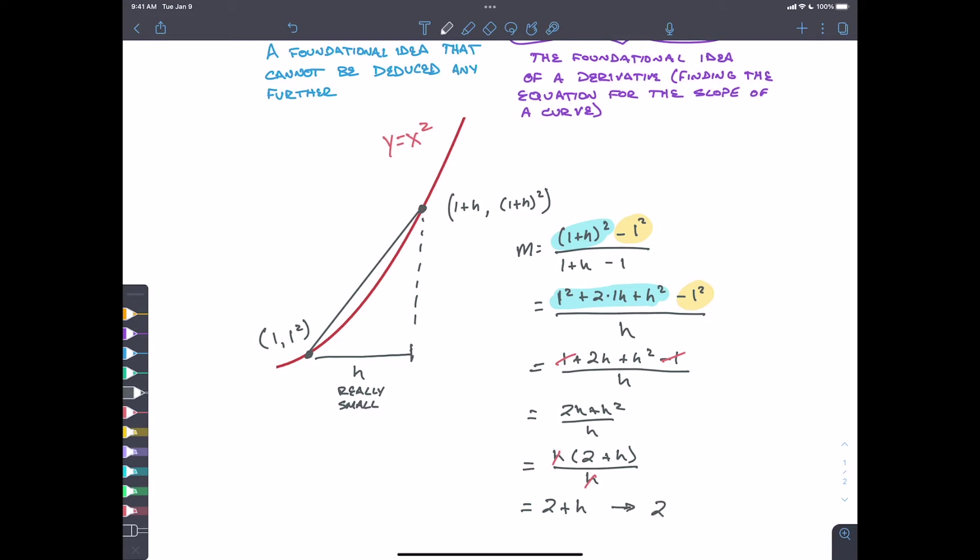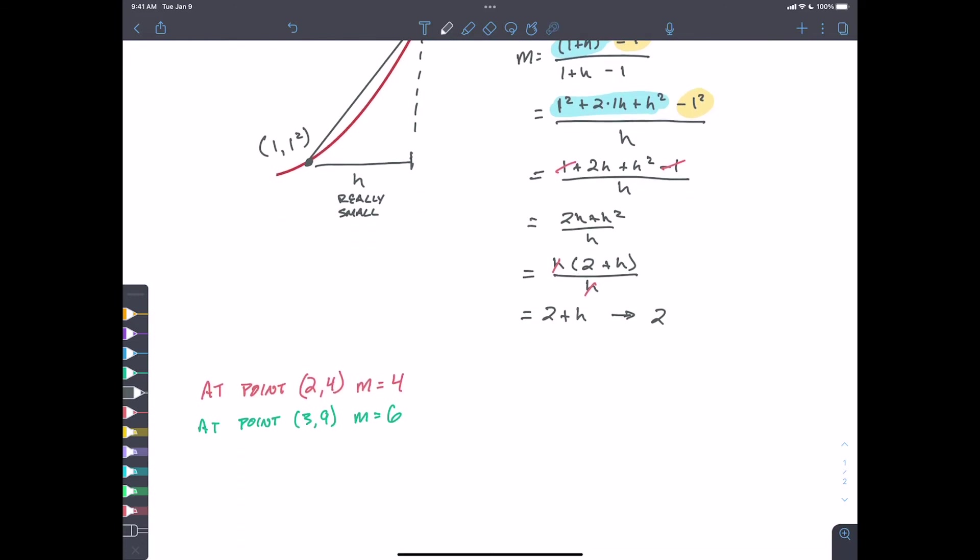So let's put this with the data that we found in the other video. And we had at point two, four, we had a slope of four. At point three, nine, we had a slope of six. And now at point one, one, we have a slope of two.